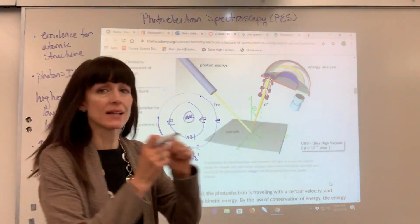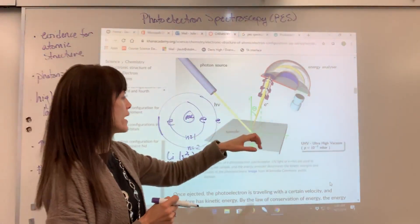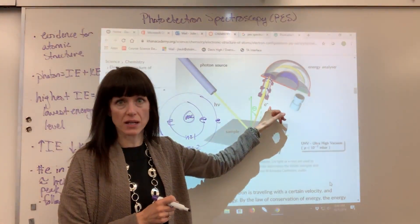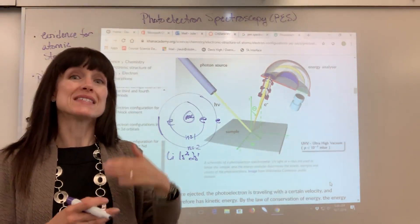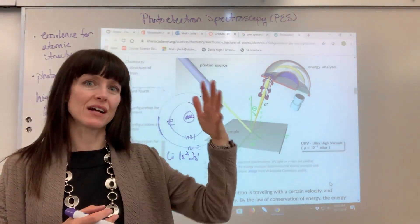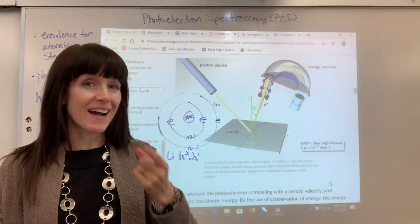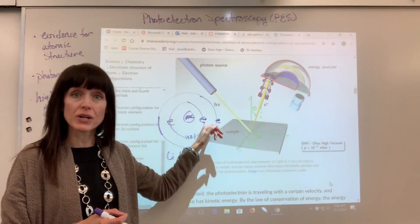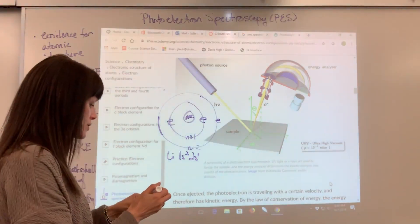Now notice this right here. So the electron is ejected, it flies away. And it's going to be detected in this energy analyzer right here. And based on the speed at which that electron is ejected, we can figure out the amount of energy that it took to remove that electron. So let me show you this.